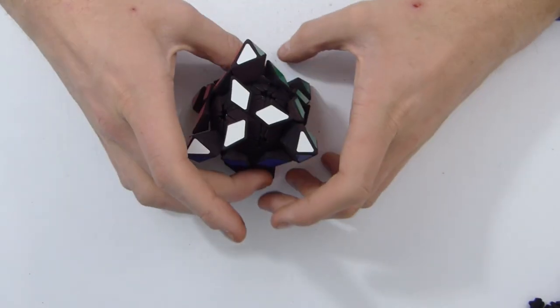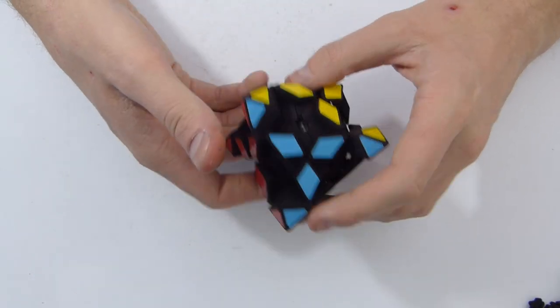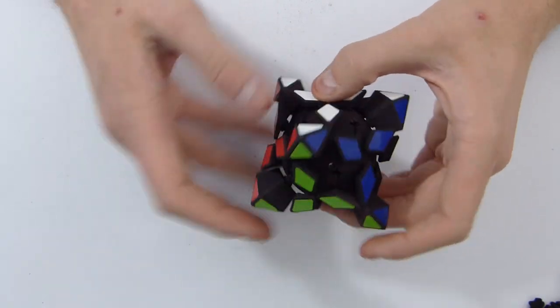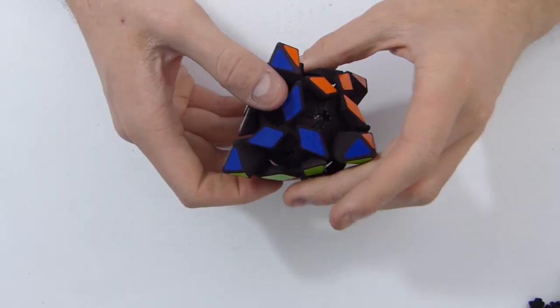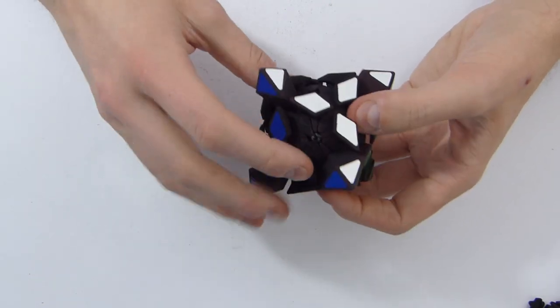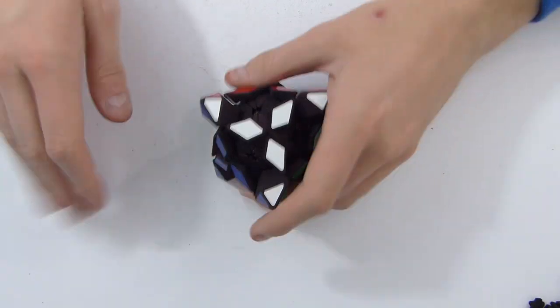and all those Pyraminx crystal edges are in place. Now, just to show you, this is what it looks like when you've only got Pyraminx crystal edges. This is what a Pyraminx crystal octahedron would look like if it was cut like this, which is pretty cool in my opinion. So, let's move on to the next part.